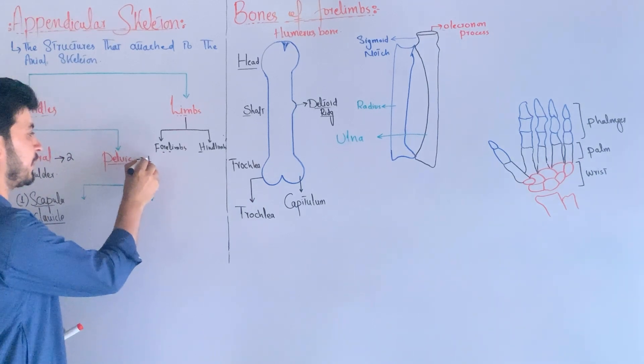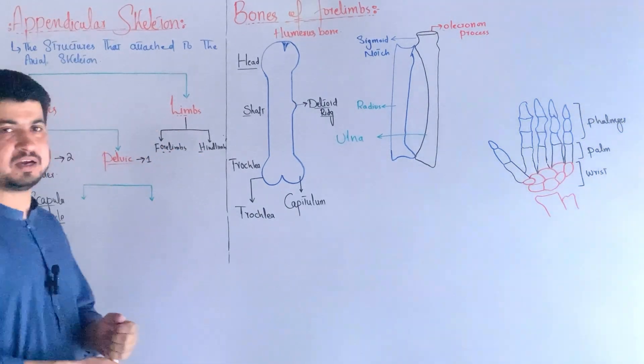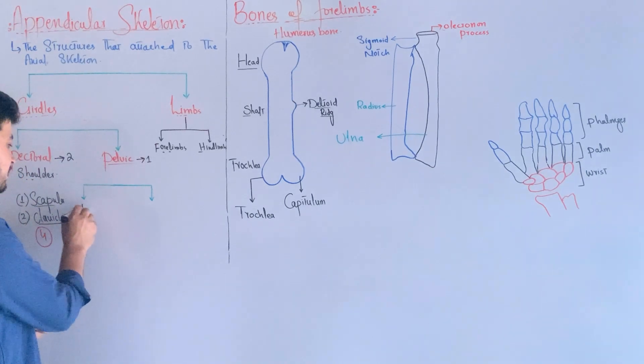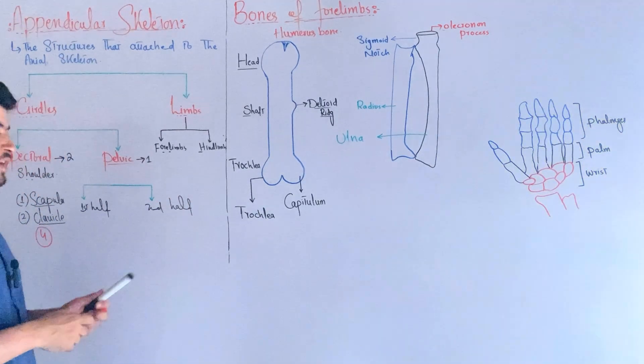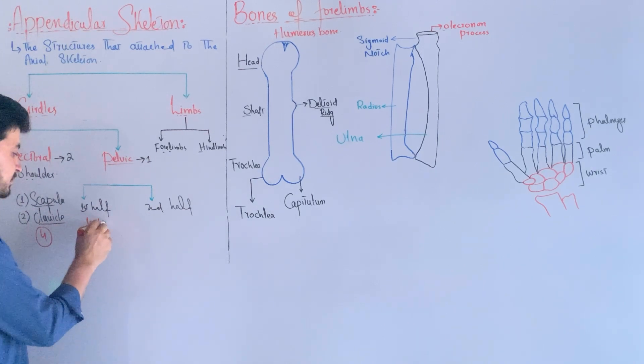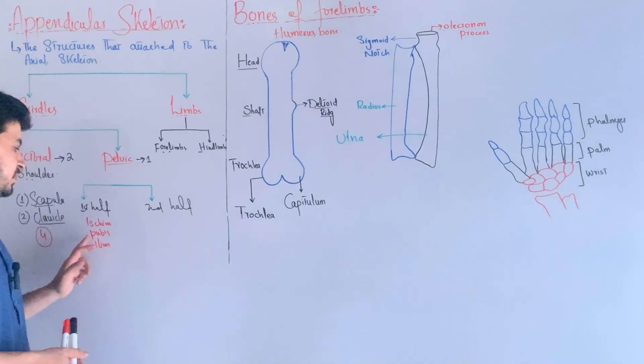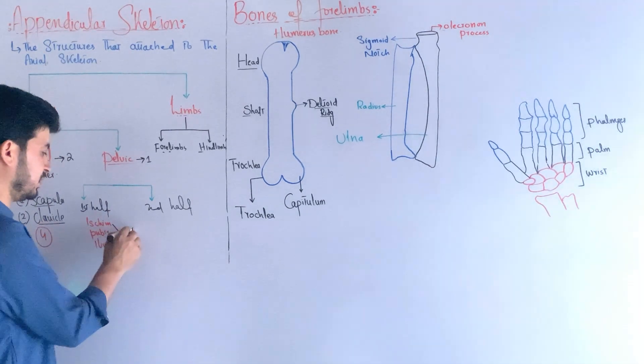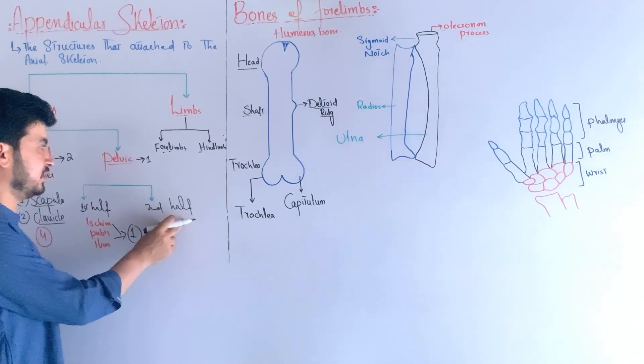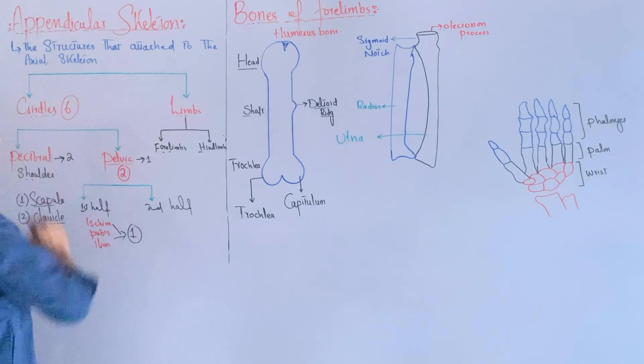The second type of girdle is the pelvic girdle, present in the hip region. The pelvic girdle attaches the hindlimbs to the axial skeleton. Each half of the pelvic girdle is formed by three bones - ilium, ischium, and pubis. The two halves together make the pelvic girdle, with a total of six bones for both girdles.